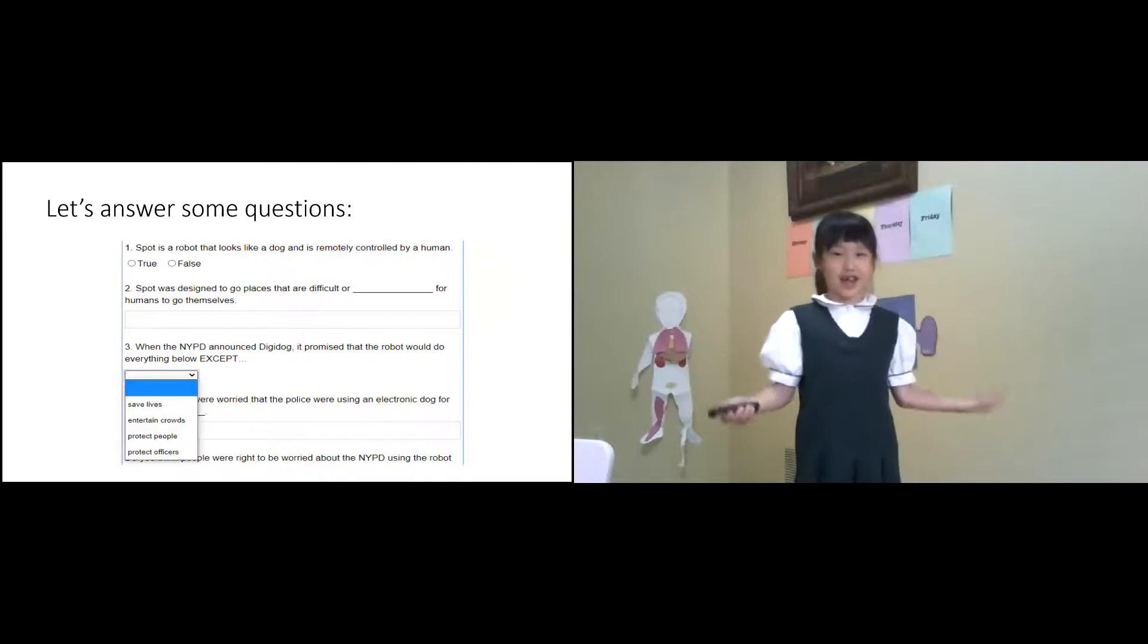Here, let's answer some questions right now. Spot is a robot that looks like a dog and is remotely controlled by a human. Is that true? Thumbs up. Is that false? Thumbs down. I see most of you have thumbs up. You are right. Spot was designed to go in places that are more difficult or dangerous for humans to go themselves.